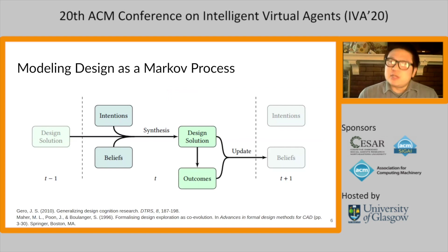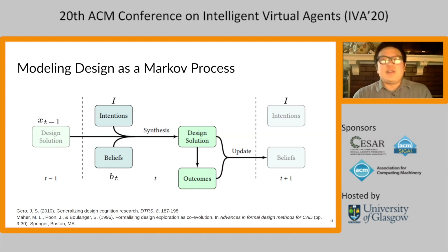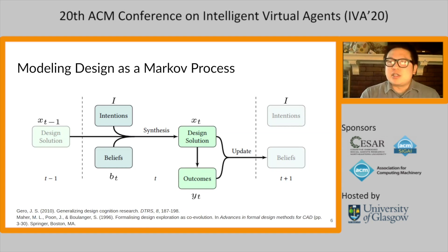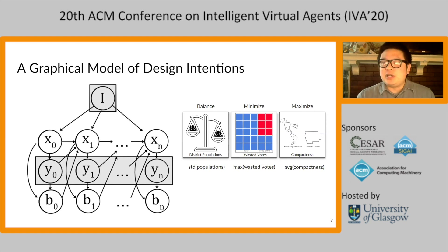We started out by adopting a simple model of the design process. Drawing on literature, we think of designing as a Markov process where each time step we update some design solution X. The update is based on some combination of the designer's intentions I and their beliefs B — beliefs about how design features map to design outcomes. For each design the designer synthesizes, we observe a set of outcomes Y and use X and Y to update beliefs. As a simplification, we assume that intentions are fixed. We represent this process as a dynamic Bayes net, where each design X_t depends on the previous design X_{t-1}, its outcomes Y_{t-1}, the designer's intentions I, and the state of beliefs B_{t-1}.